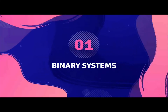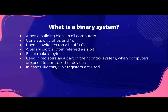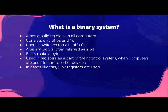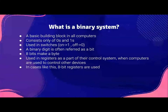So what is a binary system? It's a basic building block in all computers — the entire computer is basically made of binary digits. Binary digits are only zeros and ones, and they are used in switches: one representing the switch being on, and zero representing the switch being off. One binary digit is called a bit. Eight bits make a byte. These eight bits are usually used in registers that are eight-bit registers, as part of their control system when computers are used to control other devices.